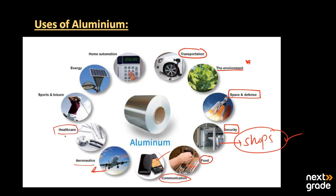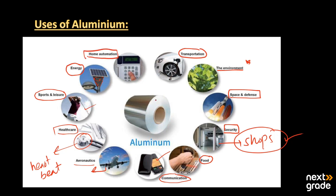Aluminum is used in the making of aeroplanes and aeronautics, in the healthcare department, and also in the production of many products related to supports and layers. It is used in energy products like solar cells, in the formation of different electrical appliances, in home automation, and in the making of windows.